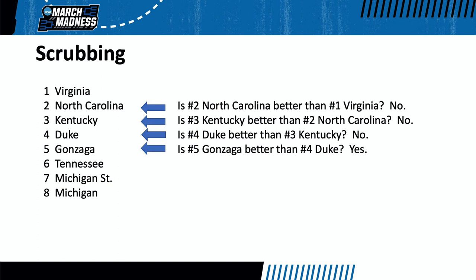If there is a motion but there is no second, the motion dies, and thus there are no changes. The committee will compare Kentucky with North Carolina, then Duke with Kentucky, then Gonzaga with Duke, all until there is a motion and a second to make a switch.